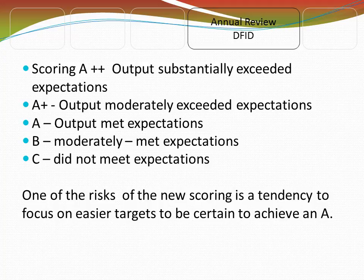DFID has a scoring system — each donor has different ones. The DFID one currently uses a scoring, as you can see on the screen, with A double-star, which states that the output has substantially exceeded expectations; then moderately exceeded expectations; and A, which met expectations. After A, you go into moderately met expectations and did not meet expectations. If you score a B or a C, you're likely to be getting into trouble and could be put on a performance improvement plan. One risk of this scoring is a tendency to focus on easier targets to be certain to achieve an A, because if you don't achieve an A you are likely to be called a non-performing project — and this has the risk of not looking at the broader issues in developing a programme.